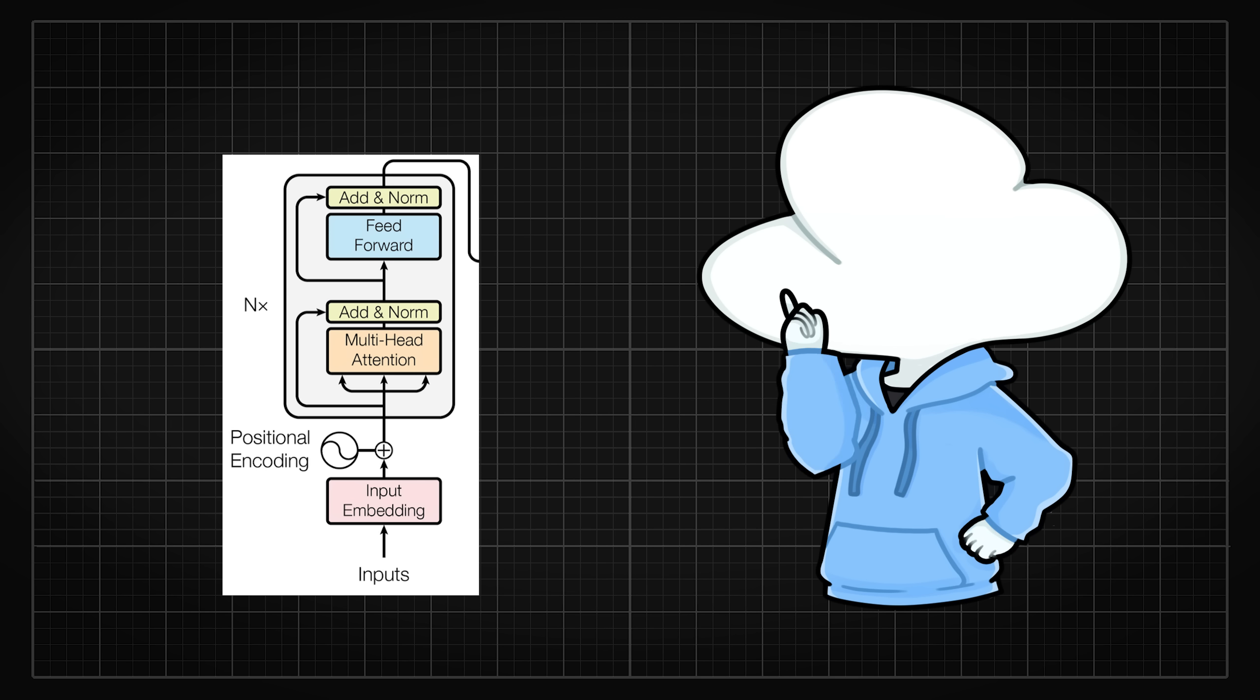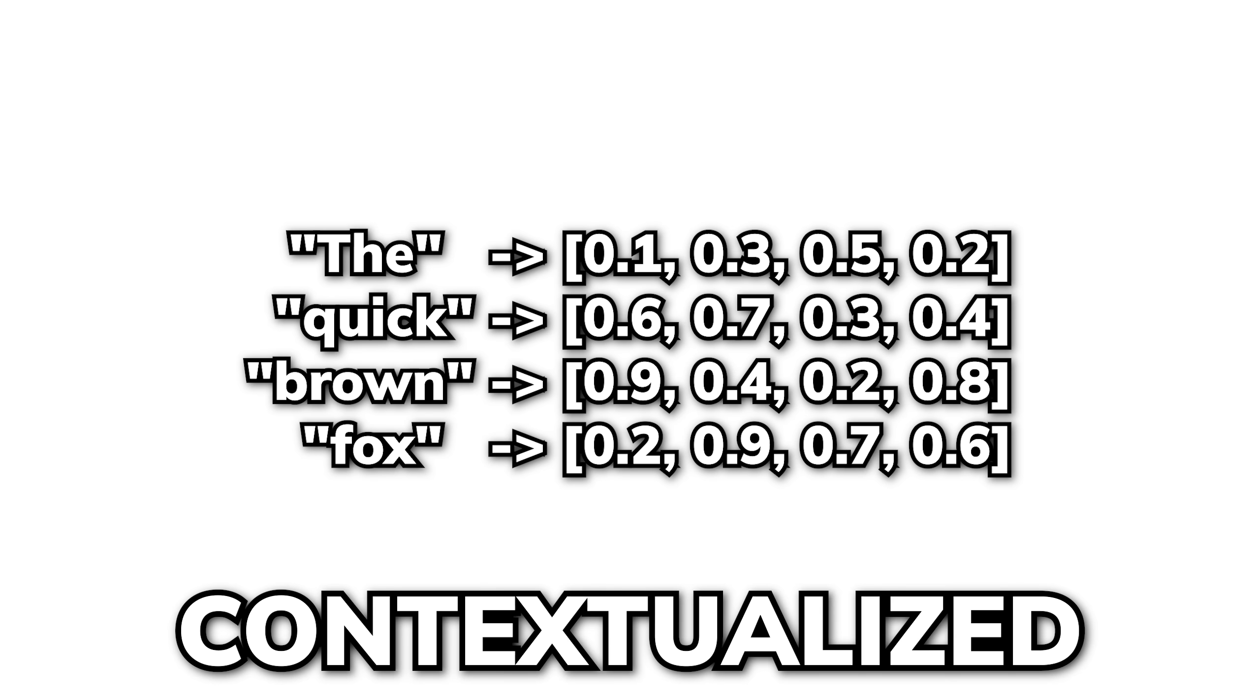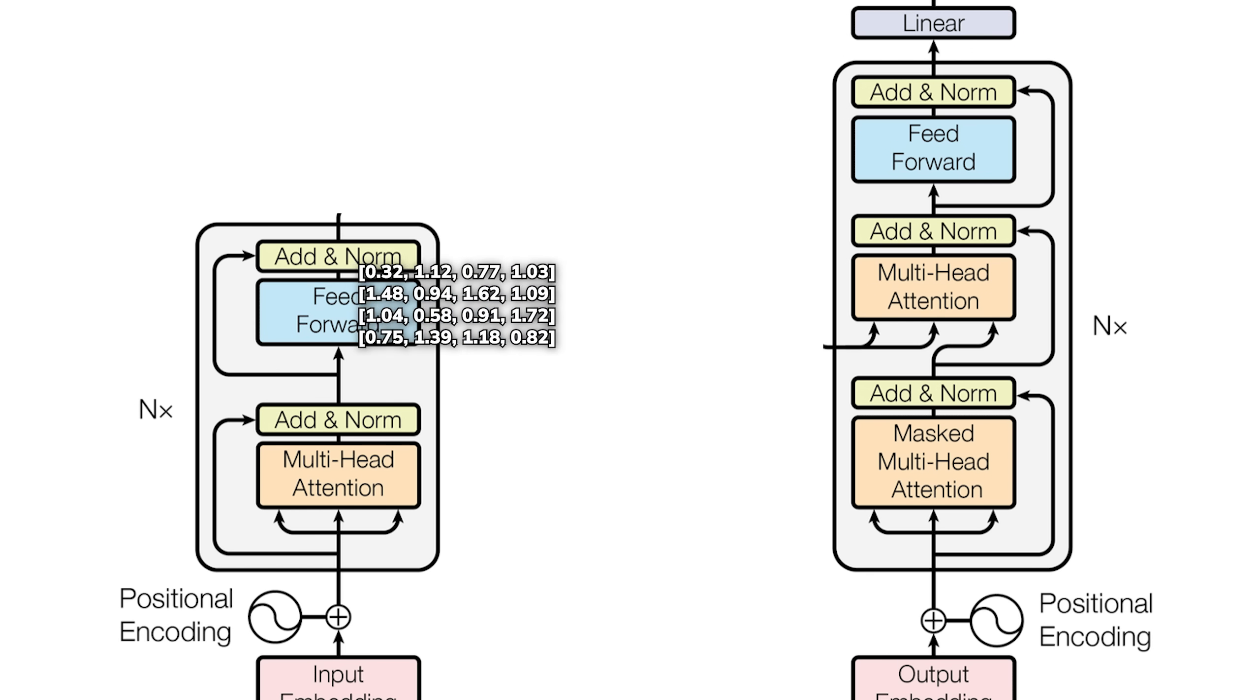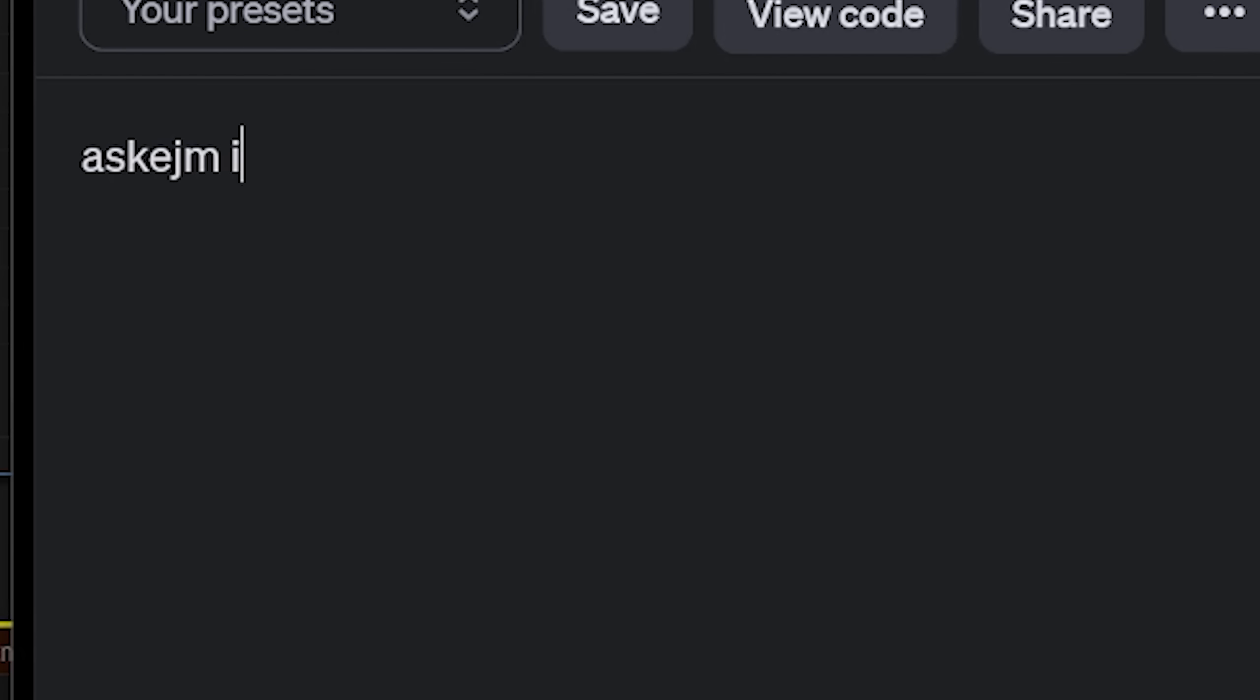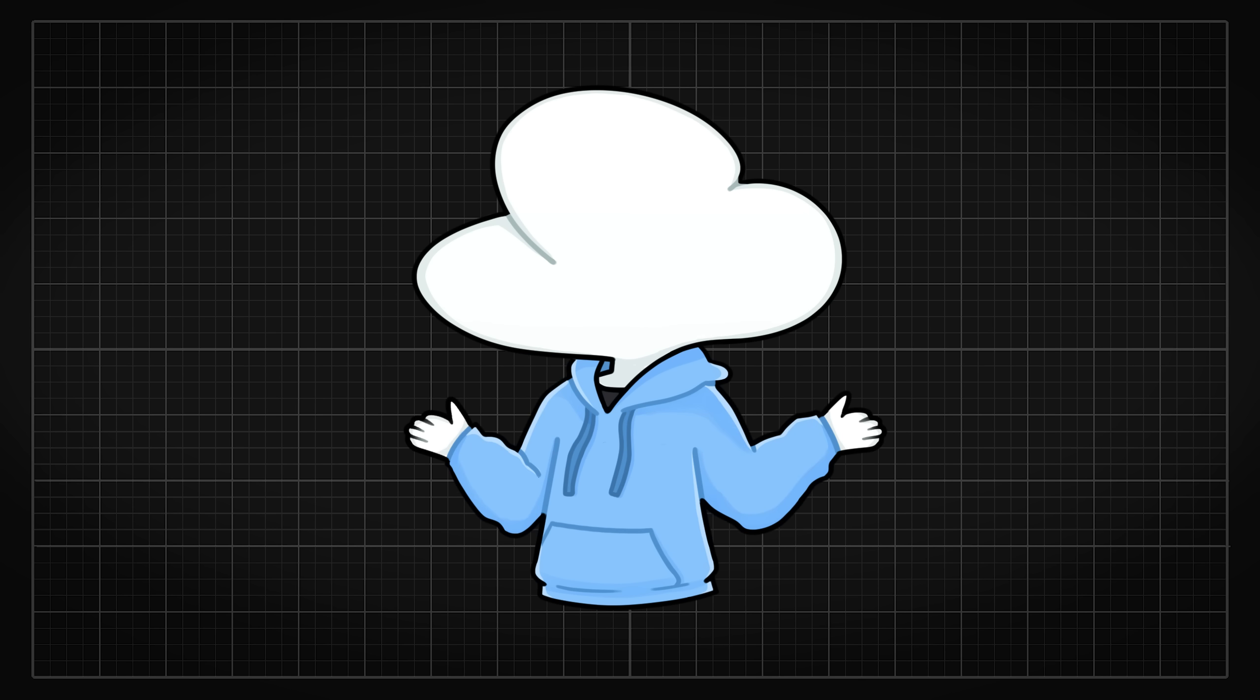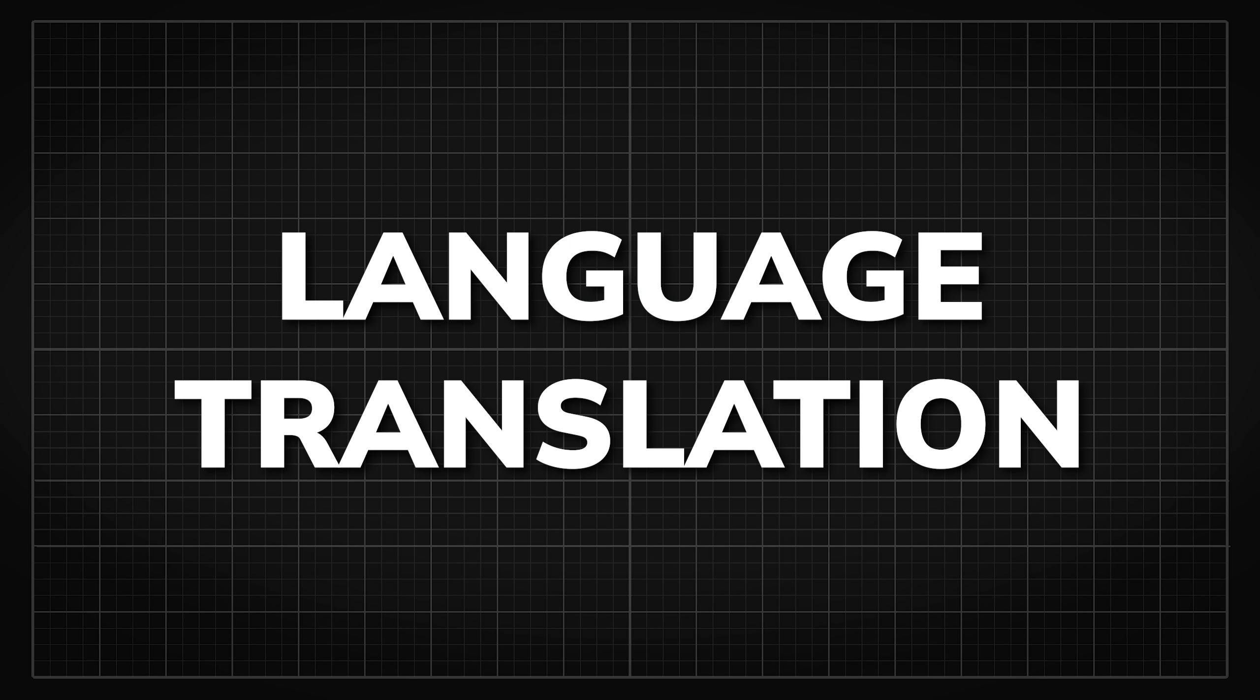The encoder processes the input text, such as a sentence in English, by transforming it into a sequence of contextualized representations that capture the essential information and structure of the input. The decoder then uses these representations to generate the corresponding output text, making the architecture particularly effective for tasks like language translation.